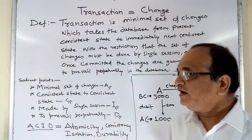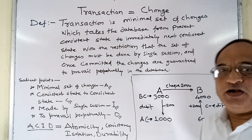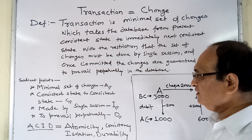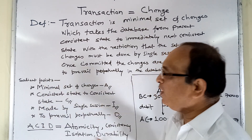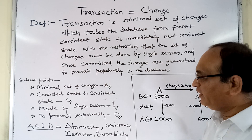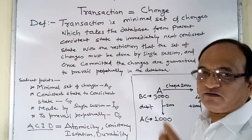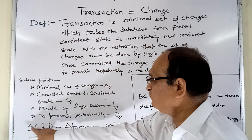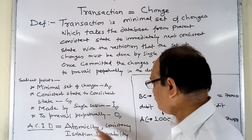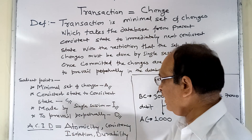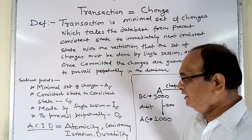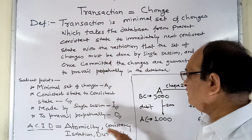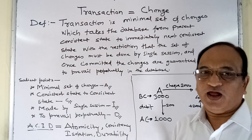ACID is the property of any valid transaction. These four points are academically known as: A — Atomicity, C — Consistency, I — Isolation, and D — Durability. So the ACID property corresponds to atomicity, consistency, isolation, and durability.